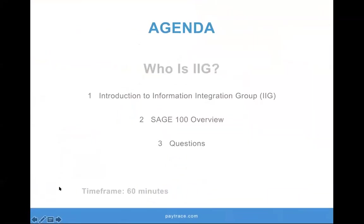Today's agenda, we're going to be talking with IIG — Information Integration Group — and their solution on Sage 100. With us today is Alex Bagdasarian, president of IIG, who's going to be doing the presentation. He's going to open with a quick introduction to their organization and how they were founded — it's pretty neat with their Sage background. He's going to walk us through an overview of Sage 100 and how the integration works, and we'll take the last few minutes to go over questions so everybody understands what this is and how it's going to benefit them.